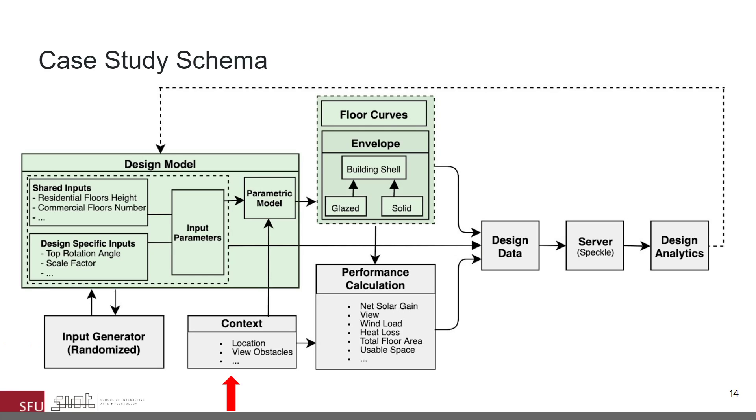Third is the context, which had information such as site, view, geography, that was provided to the parametric model.